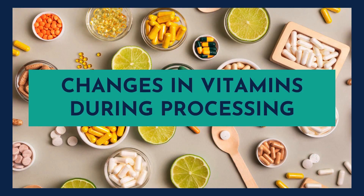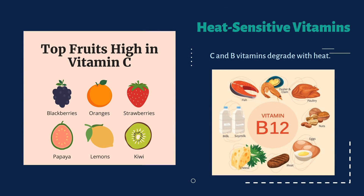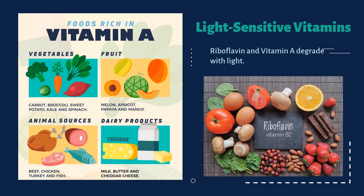Next are changes in vitamins during processing. Top fruits high in vitamin C include blackberries, oranges, strawberries, papaya, kiwi and lemon. Some are heat-sensitive — vitamins C and B degrade with heat. We know vitamins are essential nutrients but they can break down. Light can also destroy vitamins; for example, riboflavin and vitamin A degrade with light.